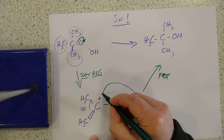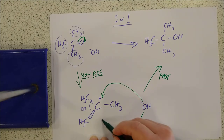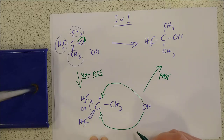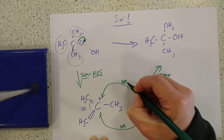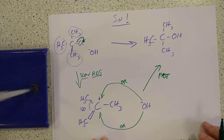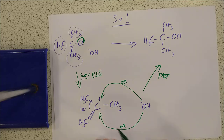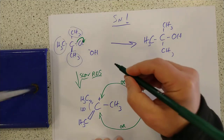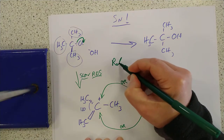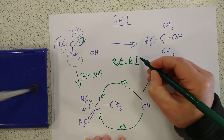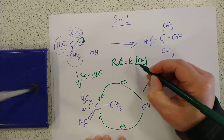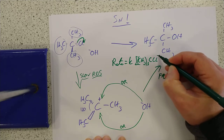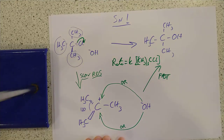Now the hydroxide is going to come in and attack here. Or of course it could come in and attack from the other side — that is a choice, and it will have consequences on the stereochemistry of the product. The rate equation for SN1 is: rate equals k times the concentration of the trimethyl chloride. That's it — hydroxide is not involved. That's why it's 1: there's only one thing involved in the rate-determining step.